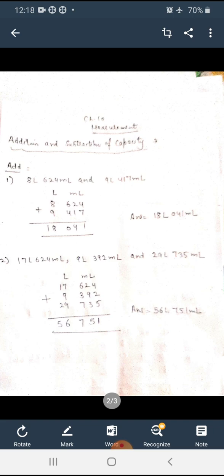Here the first question is 8 liter 624 milliliter and 9 liter 417 milliliter. You have to add. So first of all, you have to write the units. Here two units are there: liter and milliliter. Now you have to write liter in the liter column and milliliter units in the milliliter unit column. Eight liter under liter and then 624.